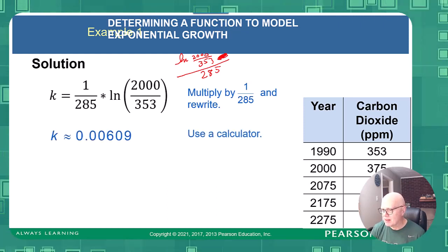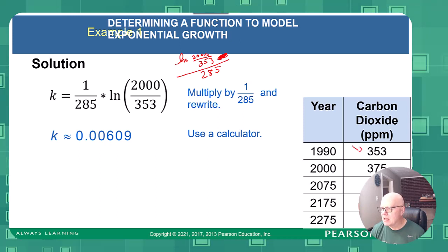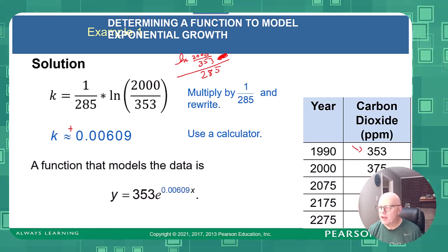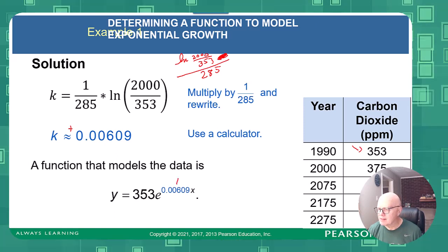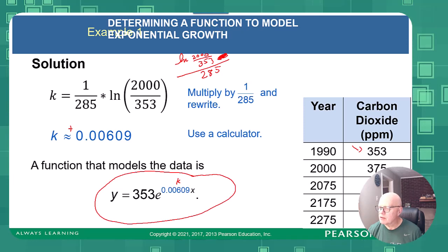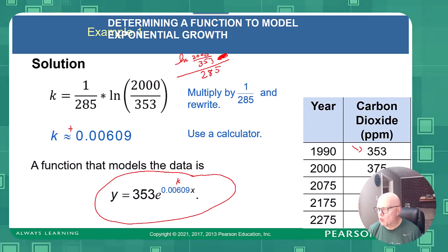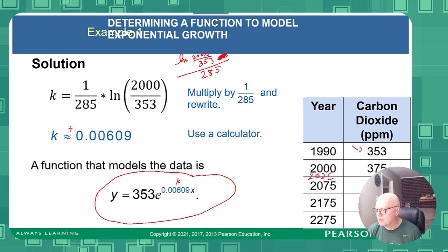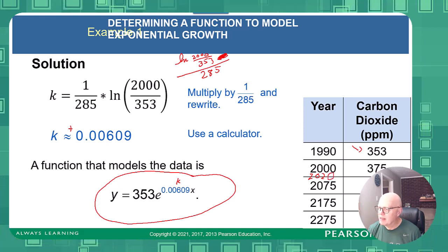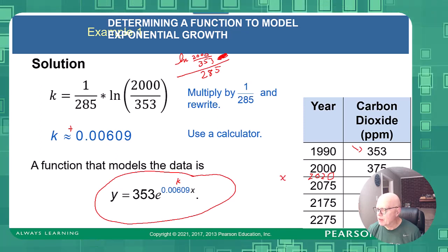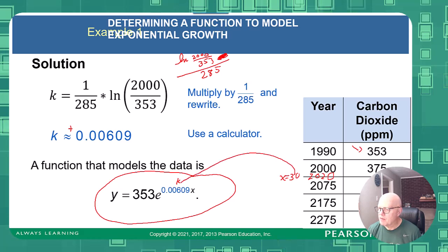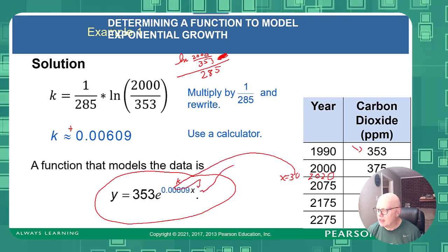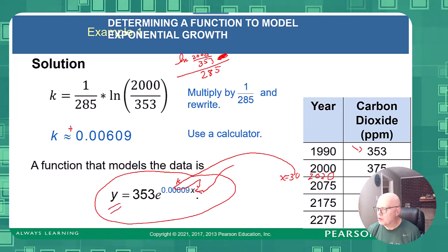Use the calculator to evaluate that. Notice that the parts per million are going up and k is a positive value, confirming it's growth. Here is our complete model. We could use it to approximate the CO₂ concentration in, say, 2020 or 2040 — for 2020, x would be 30, and we substitute that in to find the concentration.